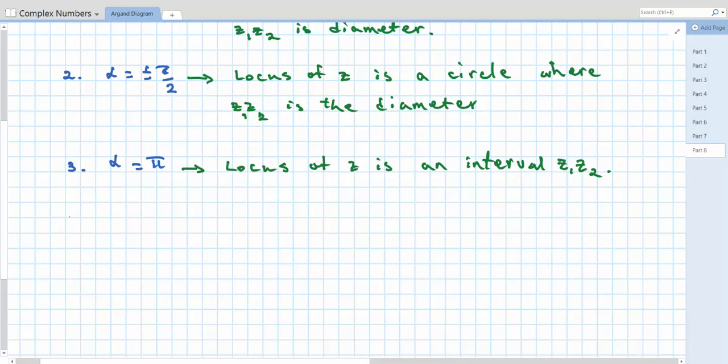And finally, what happens if alpha is equal to 0? In this case, this means that, well, let's write it out.